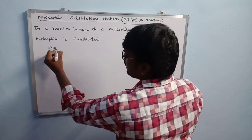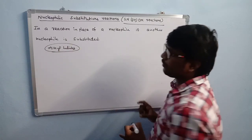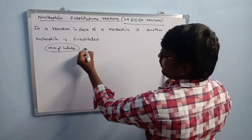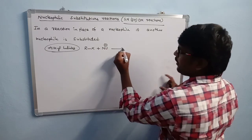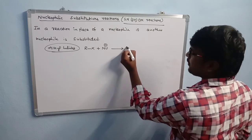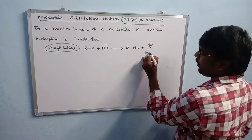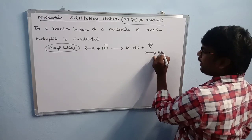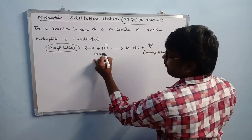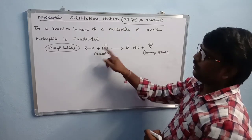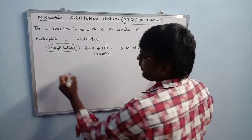In nucleophilic substitution reactions, alkyl halides generally participate. For example, take RX — an alkyl halide — reacting with a nucleophile NU. The nucleophile is substituted, giving product R-NU, while the X group leaves. Here X⁻ is the leaving group and NU is the substituted nucleophile.